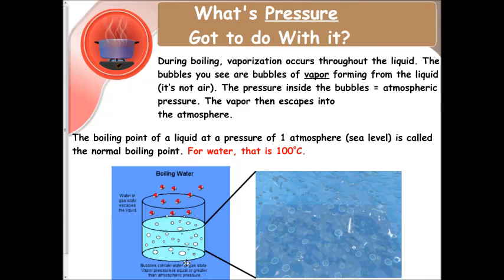Pressure. During boiling, vaporization occurs throughout the liquid. The bubbles you see are bubbles of vapor, not just air. The bubbles of vapor forming from the liquid. So the liquid is changing to the gas state and trying to leave. The pressure inside those bubbles is equal to atmospheric pressure. The vapor then escapes into the atmosphere as it leaves the liquid.